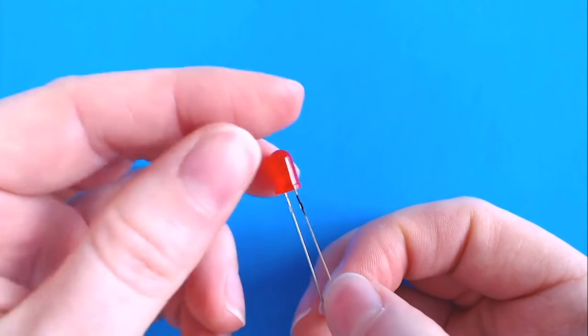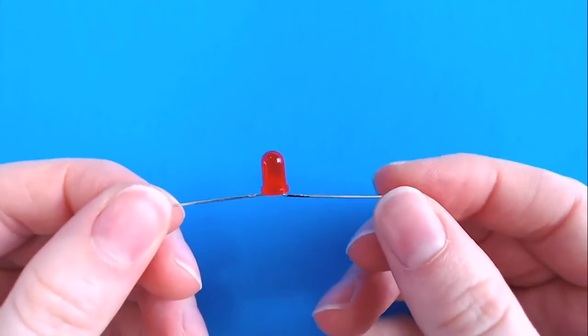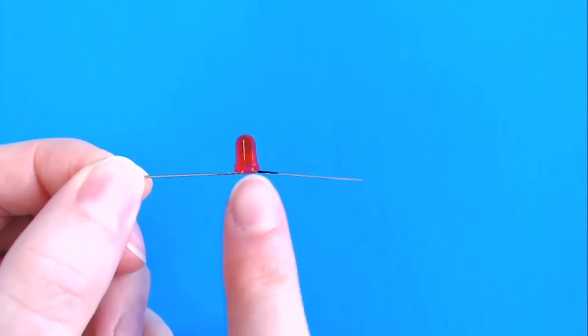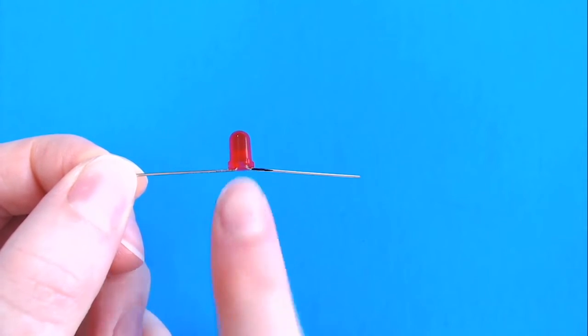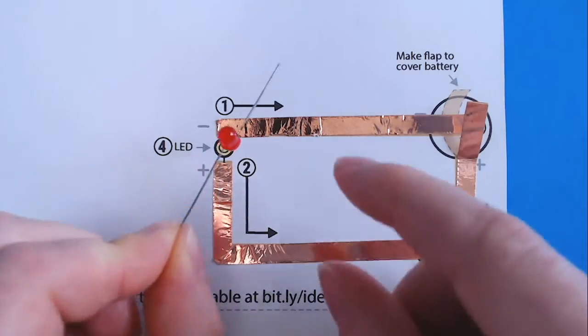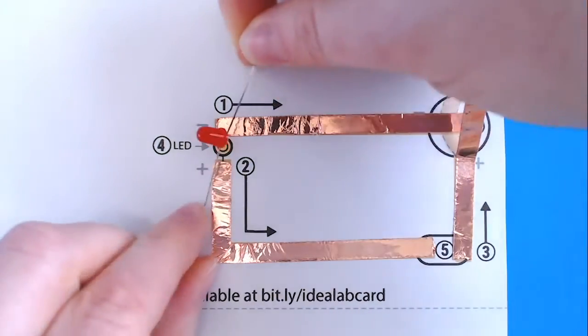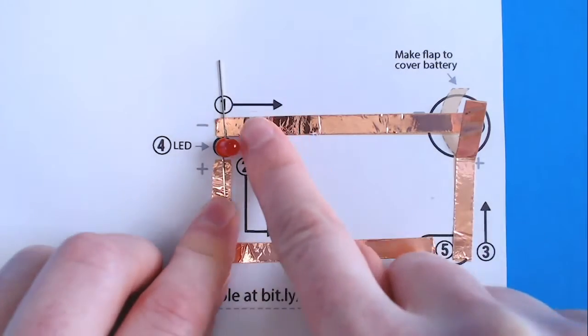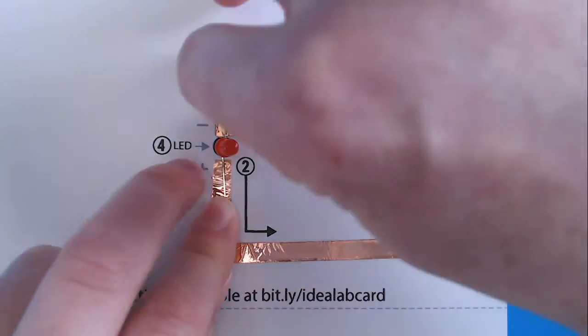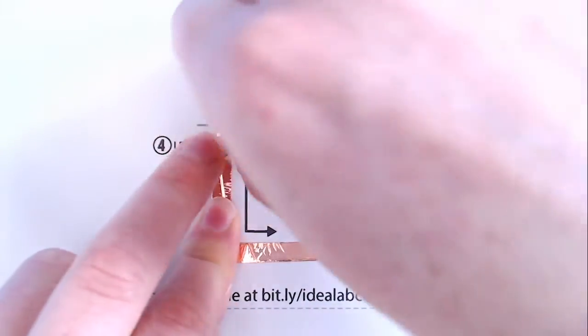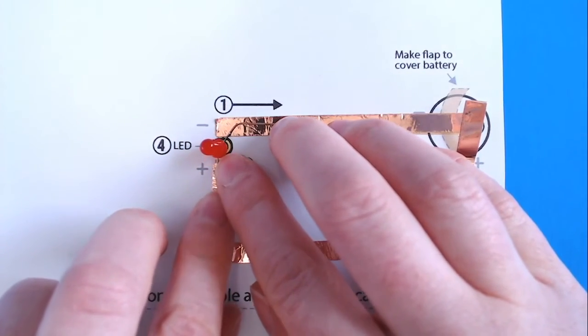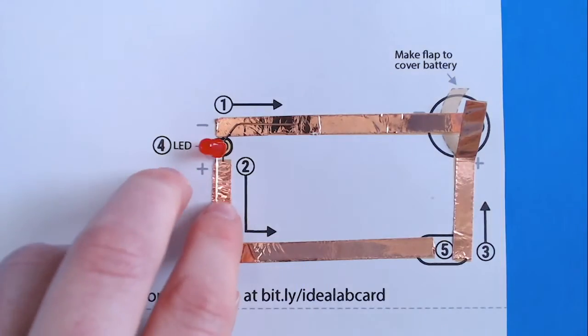To help make the LEDs sit flat on the paper, we can use our fingers to bend the wires. But now it's hard to tell which is the longer and shorter wire, which is why my little marking came in handy. Now that we've bent the LED, we can place it with the negative side touching the negative copper. You can see the wire goes straight out so we can bend it a little bit so that the wire touches the copper tape. And we want to make sure the LED is right over that gap in the tape.